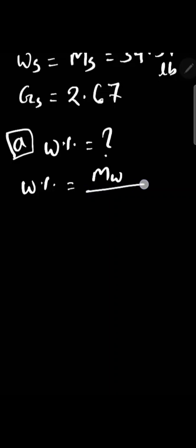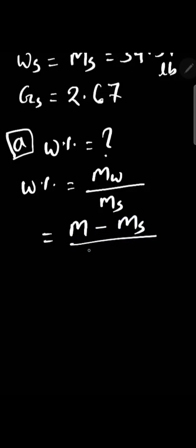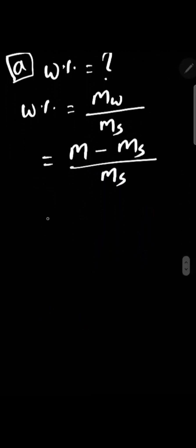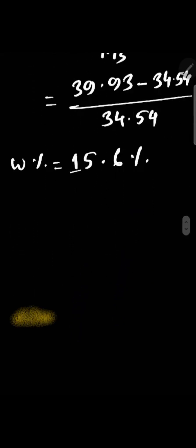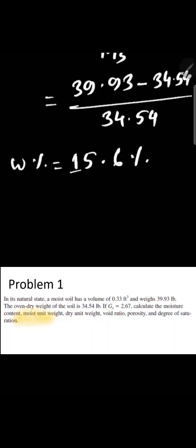The first question is to calculate the moisture content. Moisture content equals the ratio of water mass to soil solid mass, or dry weight. So we write total mass minus solid mass divided by solid mass, and moisture content will be 15.6%.